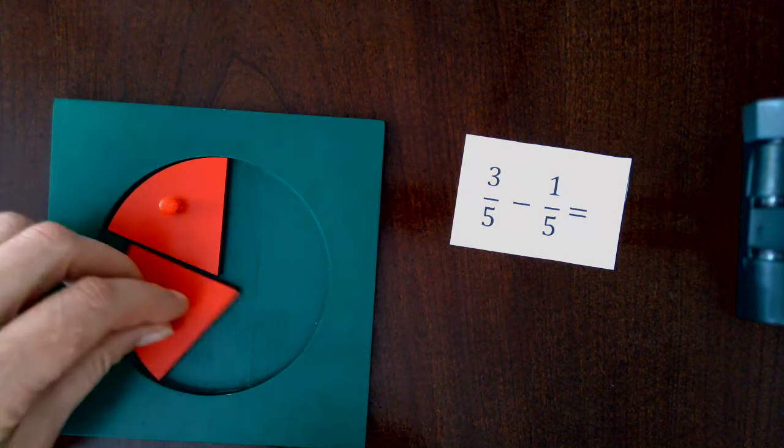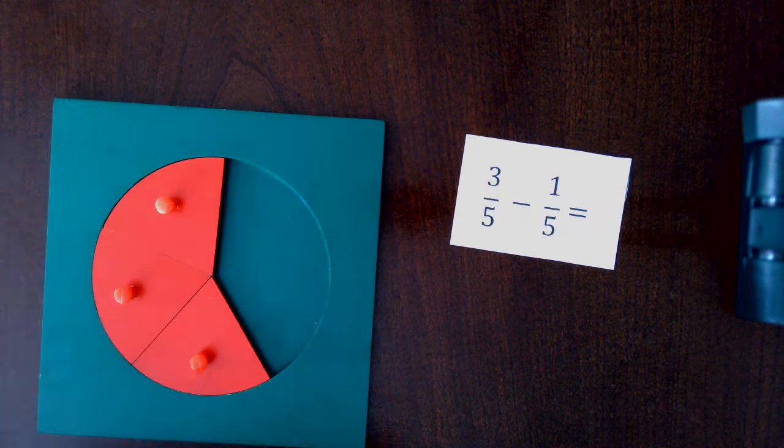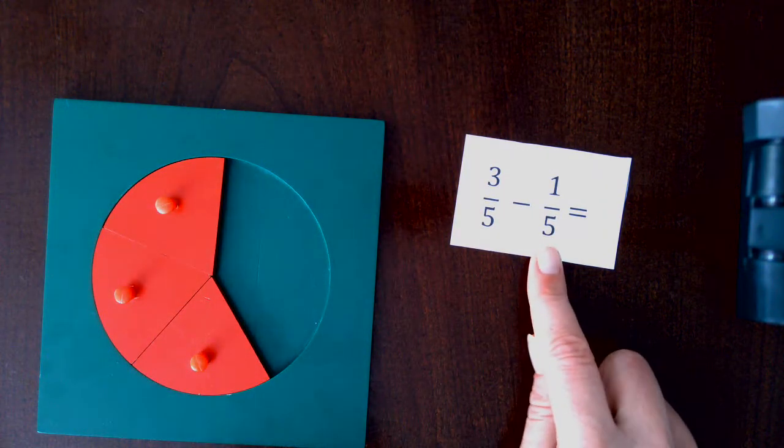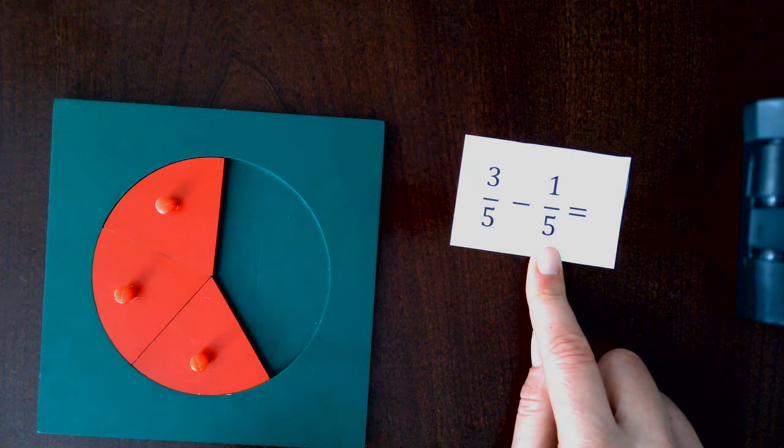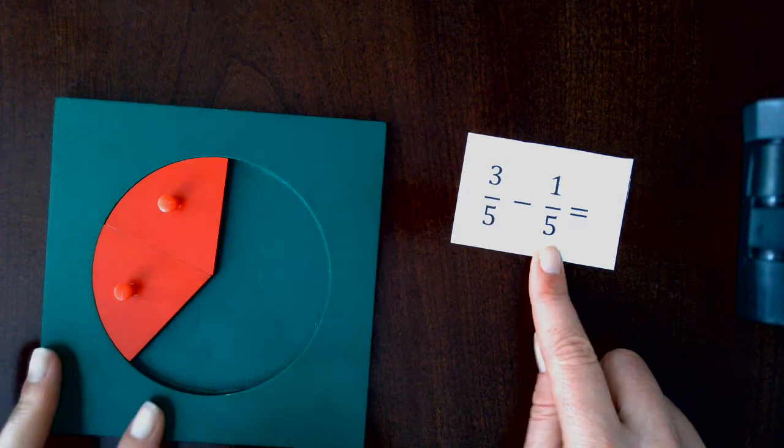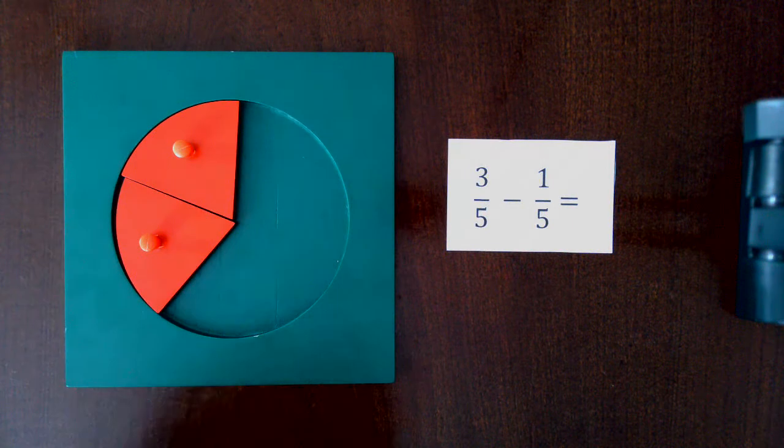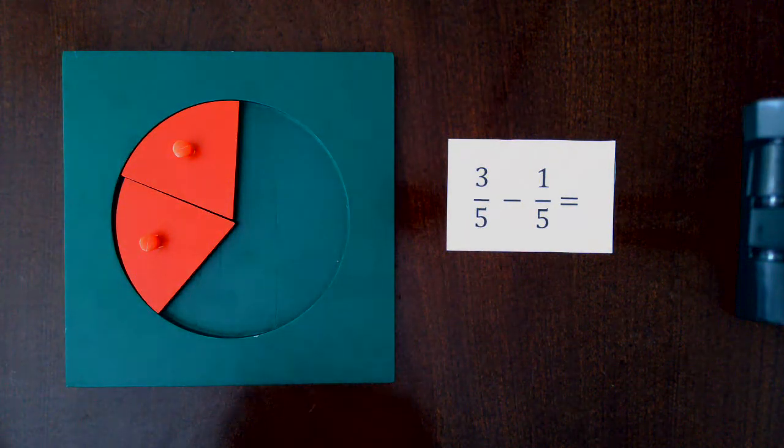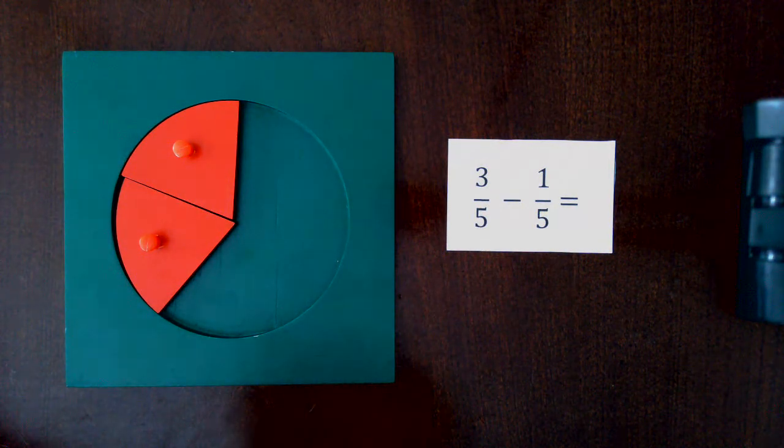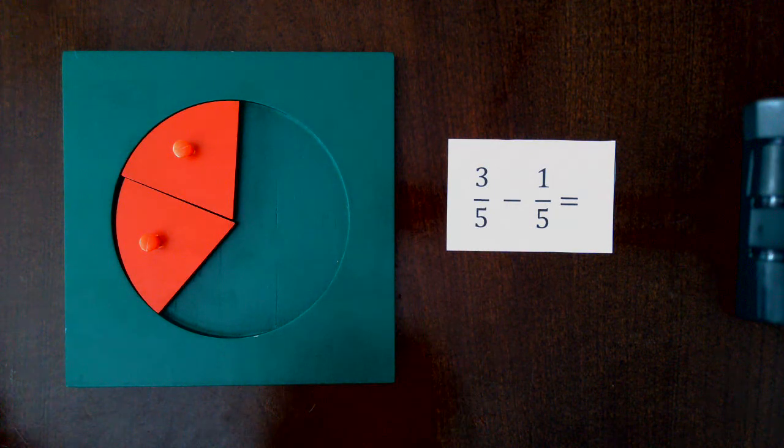One, two, three-fifths. And we're taking away how much? Yes, one-fifth. And we have left two-fifths. Just like with the other one, when the students have done a bunch of these, they can be told the rule for subtraction of fractions.